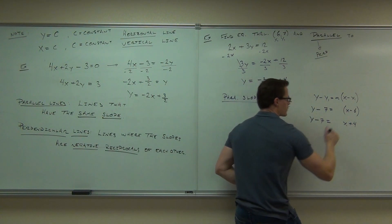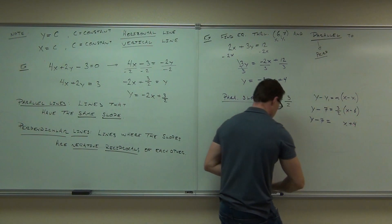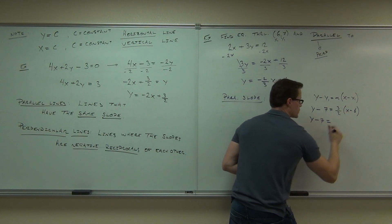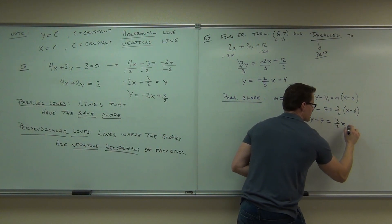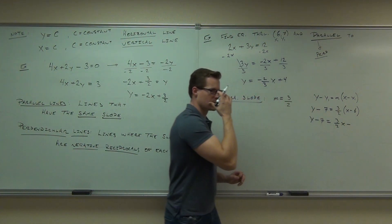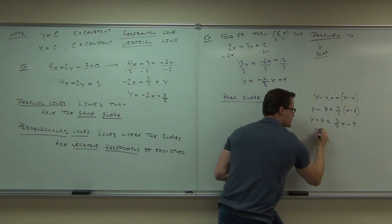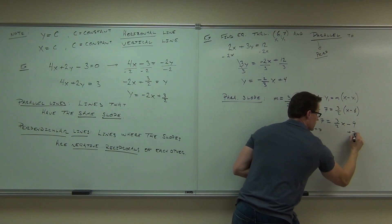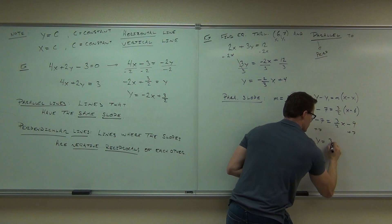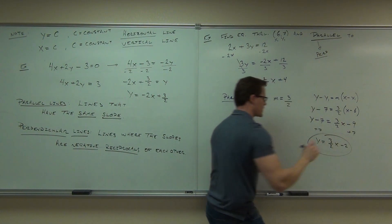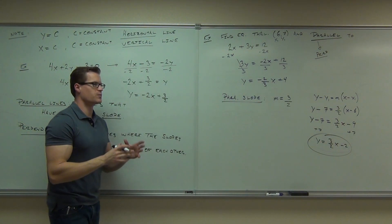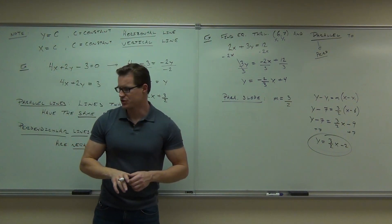This would change to our 3 halves. This would change to our 3 halves x. It'd be minus how much? Minus 9. And if we added 7 to both sides here, we get 3 halves x minus 2. So we find both the parallel and the perpendicular slope.